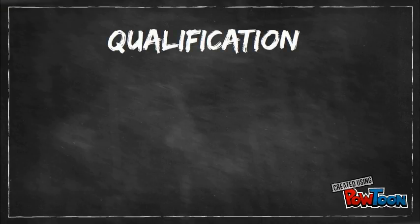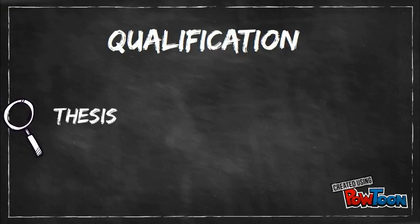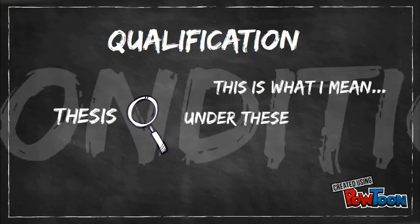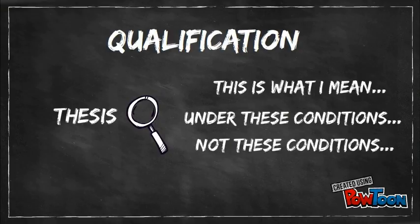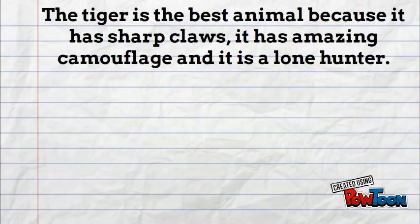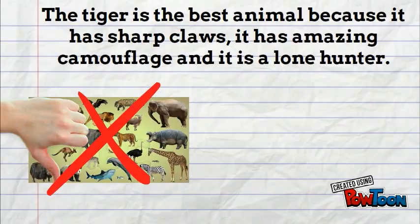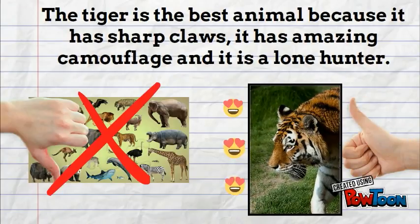The last way to conclude an essay that we will be talking about today is the qualification. In this conclusion type, you are clarifying your thesis. It is explaining your thesis so the reader doesn't think that you mean something that you don't. An example of this would be: you start with your original thesis and then say, that doesn't mean that all animals are bad, or that we should get rid of them. Other animals can be amazing too. I just like the tiger more than other animals.